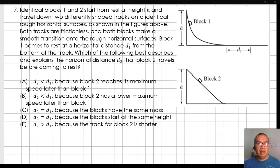Problem 7: Identical blocks 1 and 2 start from rest at height h and travel down two differently shaped tracks onto identical rough horizontal surfaces, as shown in the figures above.